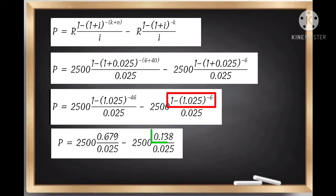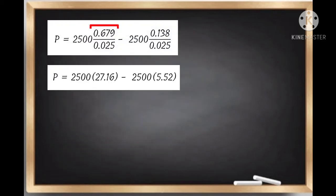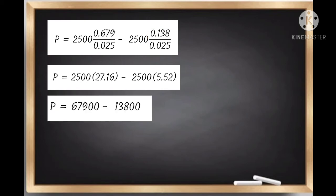Now, we divide 0.679 by 0.025, which equals 27.16, and 0.138 divided by 0.025, which equals 5.52. Let us now multiply 2,500 and 27.16, which equals 67,900, and 2,500 times 5.52, which equals 13,800.